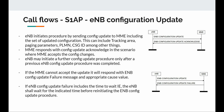Next we will look at another procedure called the eNodeB Configuration Update, which happens on the S1AP interface. Here is how the high-level call flow looks: the eNodeB sends a configuration update message to the MME, and the MME can either acknowledge it or reject it, sending an update failure message. This is the successful case, and this is the failure case.